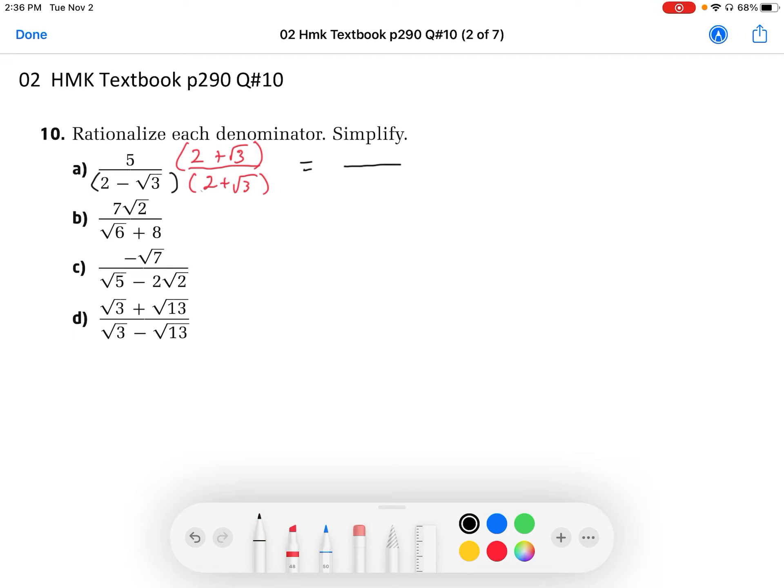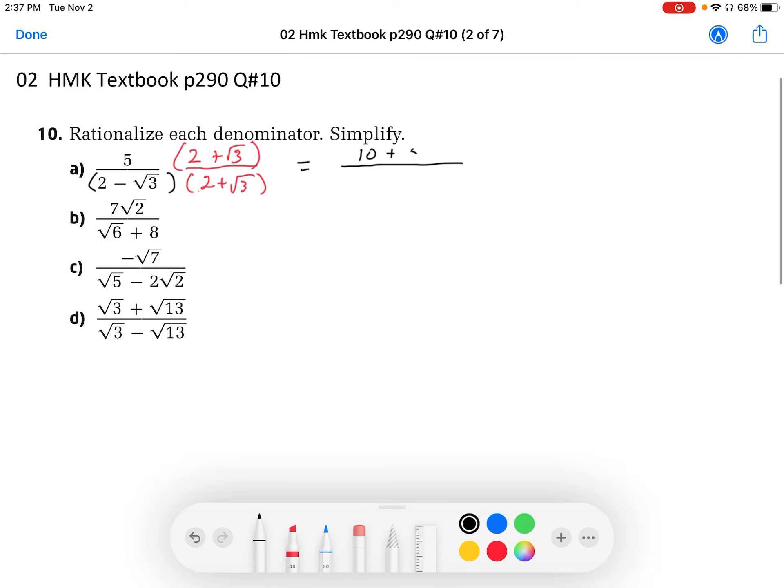In the numerator, I'm going to have 5 times 2, which is 10, plus 5 times root 3, that's going to give me a 5 root 3.